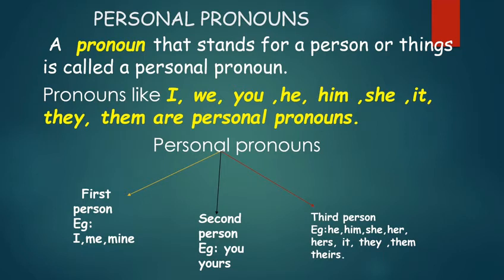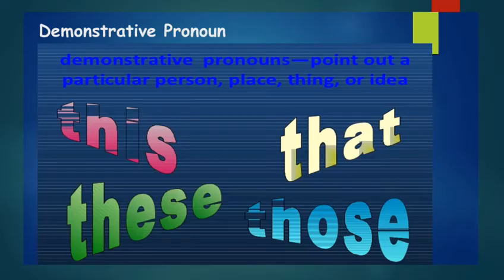So they are I, we, you, he, she, it, they, them, etc. — these are personal pronouns. Now moving to demonstrative pronouns, which point to a particular person, place, thing, or idea. Like this, that, those are demonstrative pronouns.